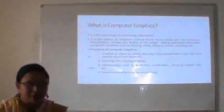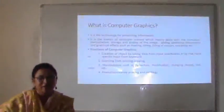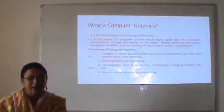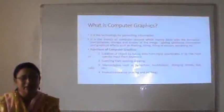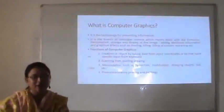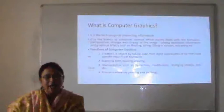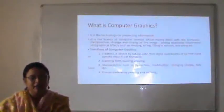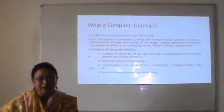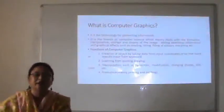What is computer graphics? It is the technology for presenting information. It is the branch of computer science which mainly deals with the formation, manipulation, storage and display of images, adding additional information and graphical effects such as shading, tilting, filling of colors, morphing, etc.